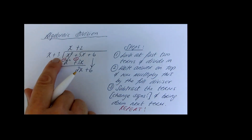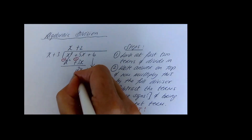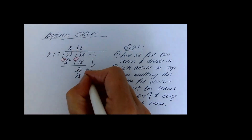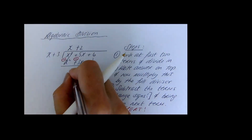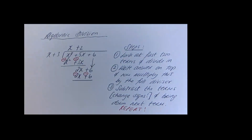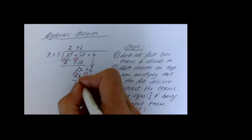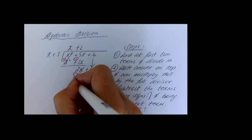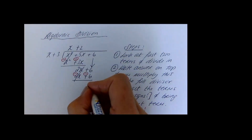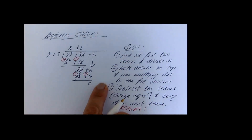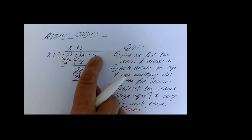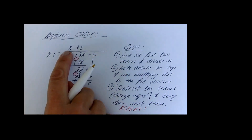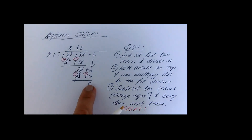Now multiply 2 by the full divisor: 2 times x is 2x, and 2 times 3 is 6. Step three — subtract the terms, or change the signs. 2x take away 2x cancels, and 6 take away 6 is nothing. So x plus 3 divides into x squared plus 5x plus 6 exactly x plus 2 times with no remainder.